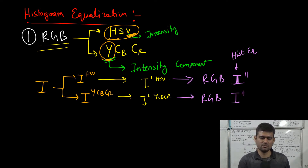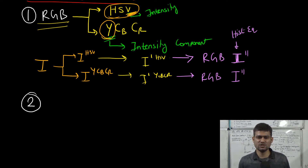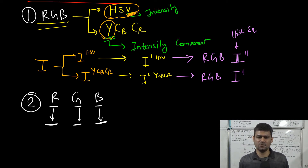This is one popular method to histogram equalize color images. A naive approach is to histogram equalize each channel — red, green, and blue — separately. In this second approach, we apply histogram equalization or adaptive histogram equalization to the R channel, then the G channel, then the B channel independently.